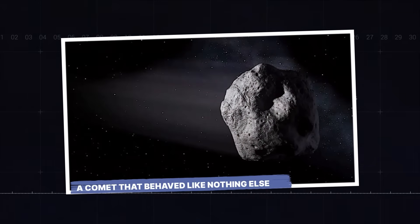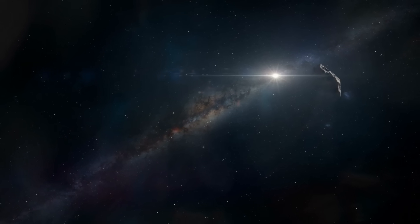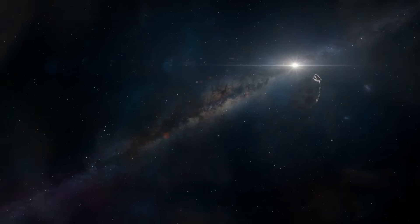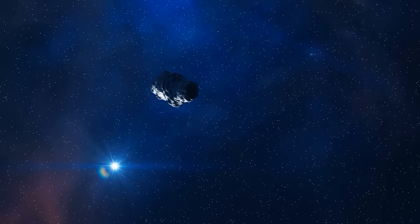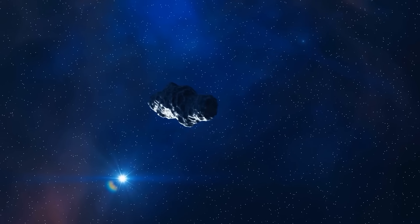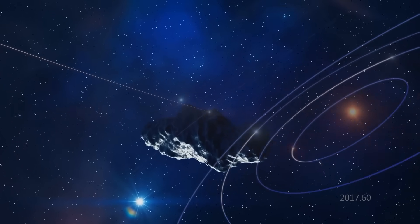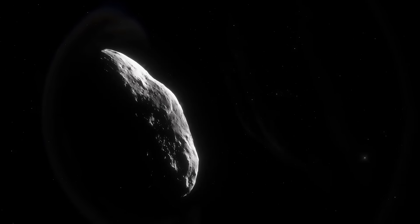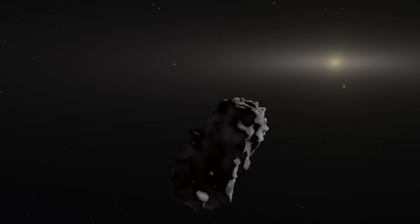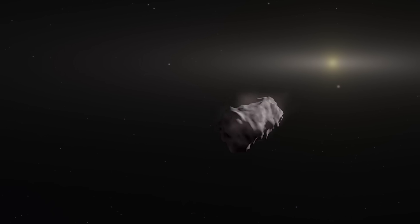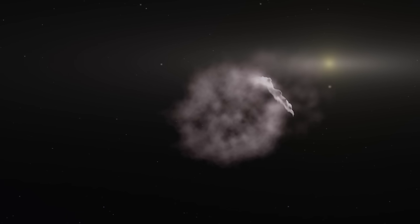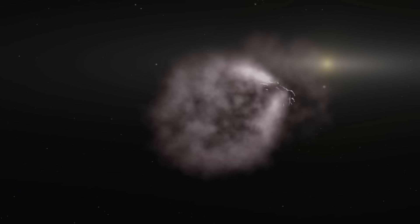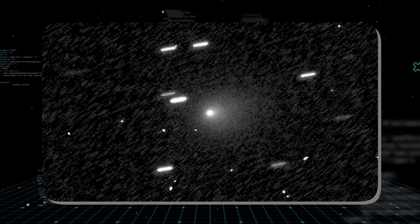A Comet That Behaved Like Nothing Else. To understand why this warning was so terrifying, you have to understand that 3I Atlas was never a normal comet to begin with. From the very beginning, it broke all the rules. Comets are, for the most part, predictable. They're like dirty snowballs, leftovers from the formation of the solar system about 4.5 billion years ago. They follow long, elliptical orbits. And as they approach the sun, the ice on their surface turns to gas, creating a glowing cloud called a coma. And, of course, the famous tail. The thing is, Atlas's behavior was off the charts.